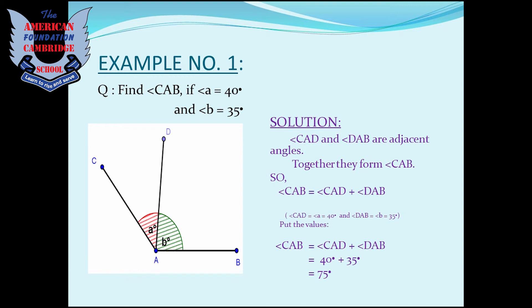Solution: Angle CAD and angle DAB are adjacent angles. Together they form angle CAB. So angle CAB is equal to angle CAD plus angle DAB. We know that angle CAD is equal to 40 degrees and angle DAB is equal to 35 degrees.